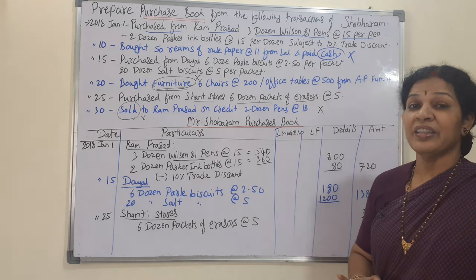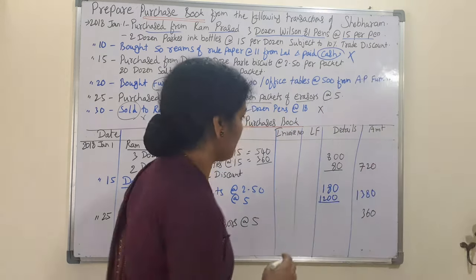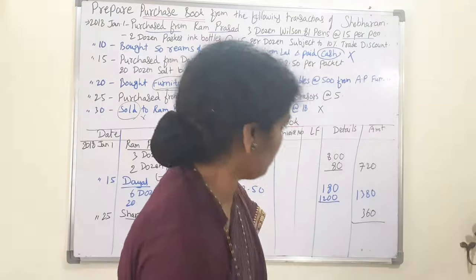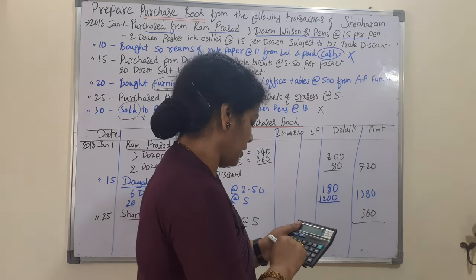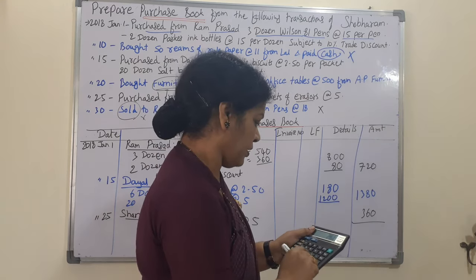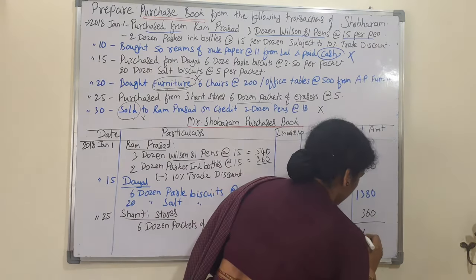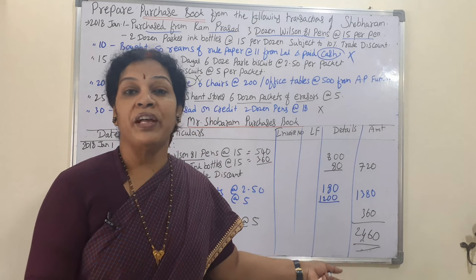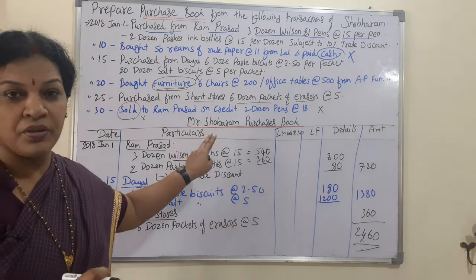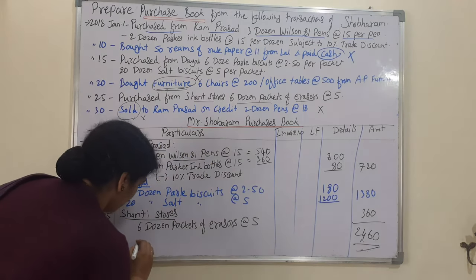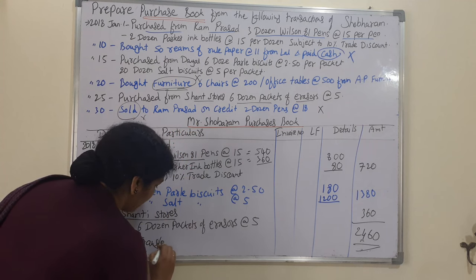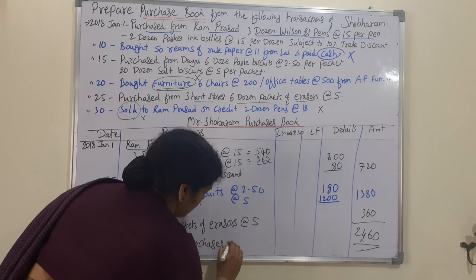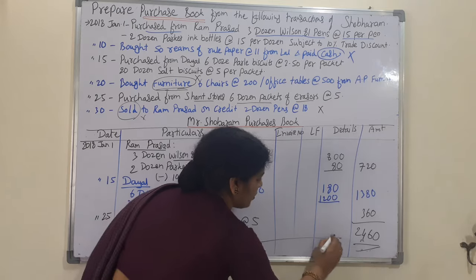Altogether we have only 3 valid transactions. Let's total them: 720 + 1380 + 360 = 2460 rupees. This total amount of 2460 will be transferred to the purchase account. In the purchase book we write at the bottom: 'Transferred to Purchases Account — 2460 rupees.'